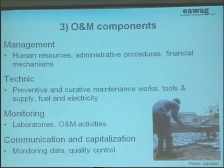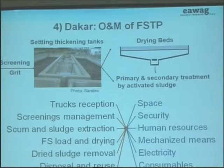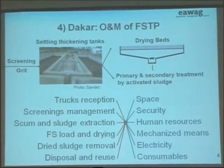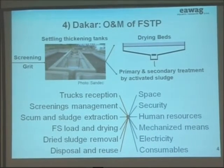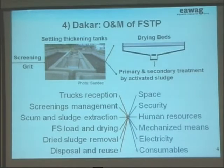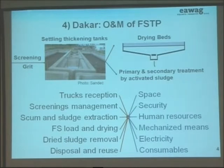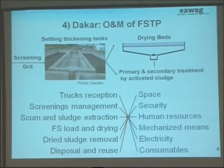Coming now to the practical case of Dakar, the treatment plant at Carmelen is composed of a screening grid, a settling thickening tank, and a drying bed for the sludge fraction. The liquid fraction is collected and transported to a nearby wastewater treatment plant. To operate even these three simple technologies — screening grids, settling thickening tanks, and drying beds — we need space, security equipment, security procedures, and human resources.